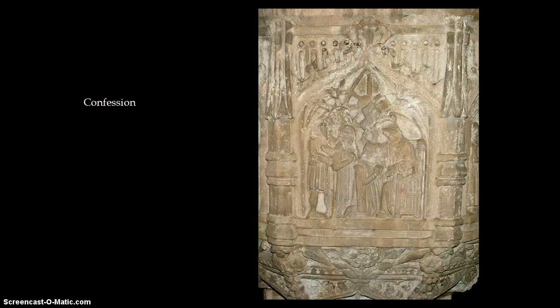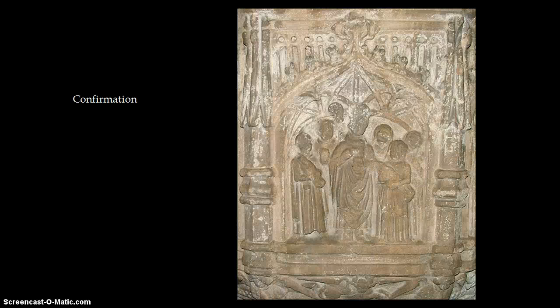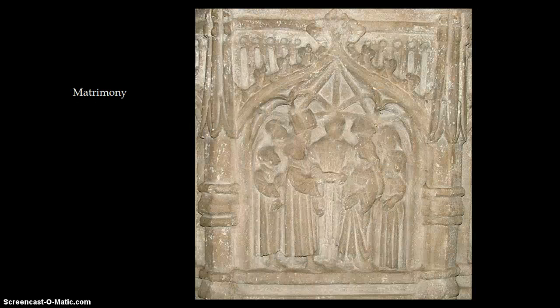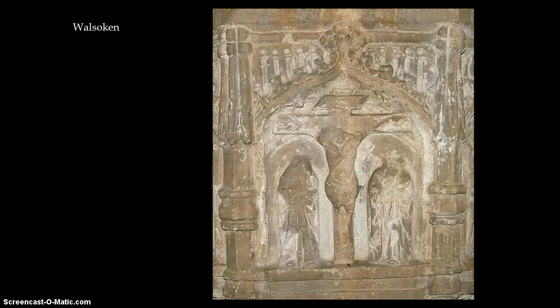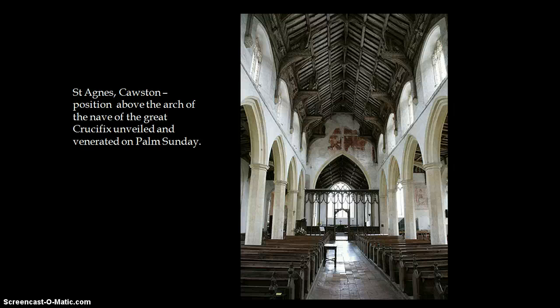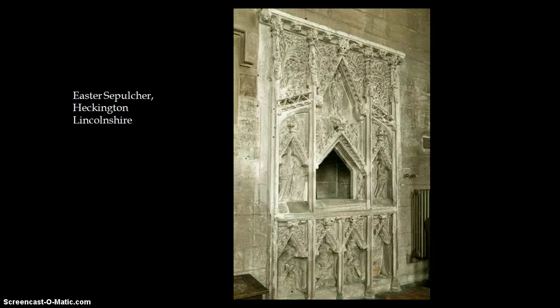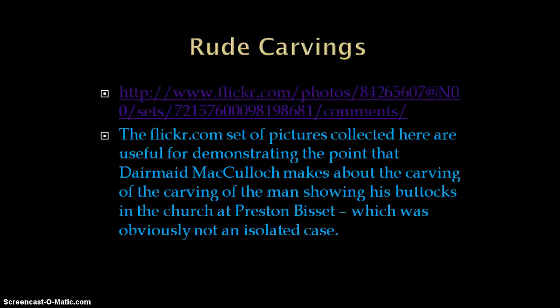This is a carving showing the Mass, a carving showing confession, a carving showing confirmation — I hope you can hear me hitting the spacebar each time to move them forward — matrimony, ordination, last rites. And this is a crucifix on the eighth side of the octagonal font. Here a large crucifix has been above the arch of the nave, a palm cross, an Easter sepulchre, and a link that I've put at the end. So I've reached the end of my presentation.